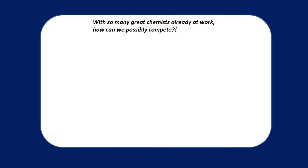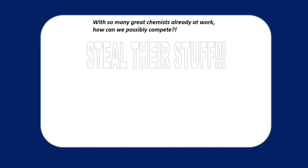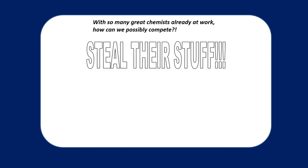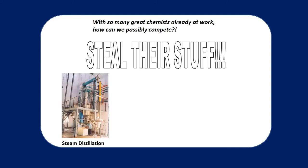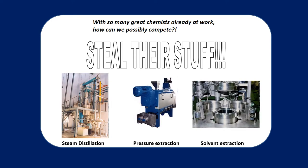So with so many powerful organic chemists at work aside from human beings, how is it that we can possibly compete in a laboratory? After all, these biological systems have been finely honed over hundreds of millions — if not a few billion — years. Well, the answer is often that we don't bother to compete. We just steal their stuff. We do it using an array of techniques including steam distillation, pressure extraction, solvent extractions, and many others. This week we'll be using steam distillation to acquire one of these useful small organic molecules from a very familiar plant source.